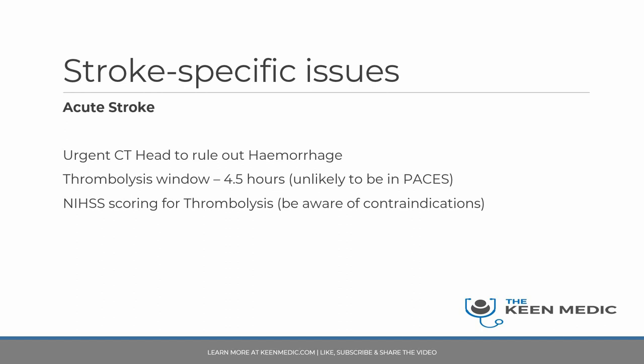The NIHSS is a scoring system used to score patients for potential thrombolysis. You don't need to memorize the entire table, but you need to know it exists, that it must be used before thrombolysis, and you need to know the contraindications. One key contraindication is anticoagulation — if a patient is on anticoagulation, you would not thrombolyse them because they would simply bleed.